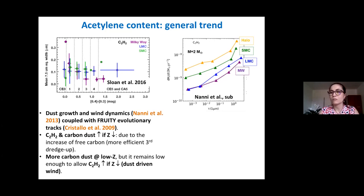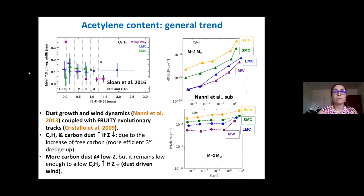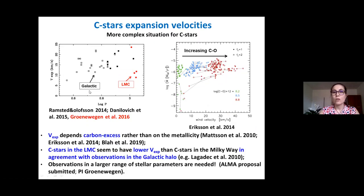The dredge-up brings up more carbon which produces acetylene molecules. Even if we produce more carbon, we still see an increase in acetylene content because the carbon dust produced at one point is altered — carbon is accelerating the outflow, dropping the density of the envelope and stopping carbon dust formation. We did this also for three solar masses and find a similar trend.